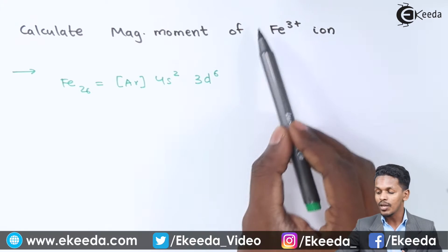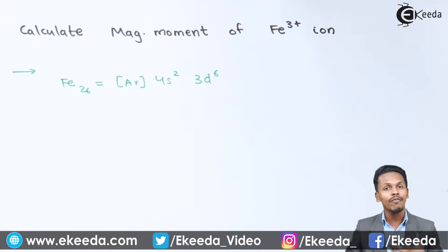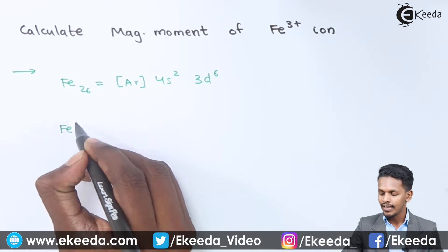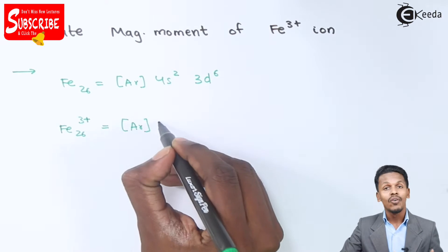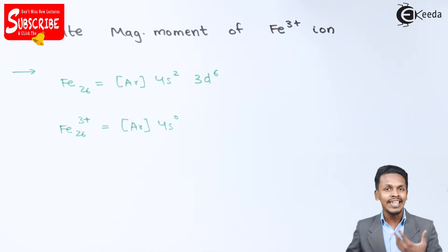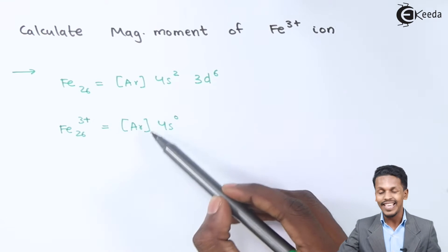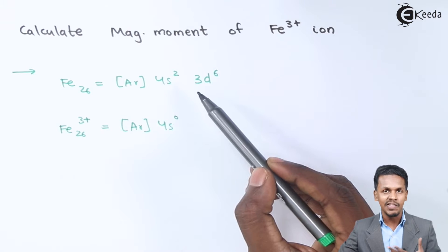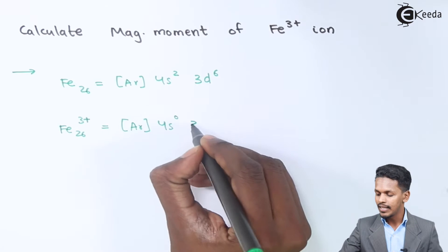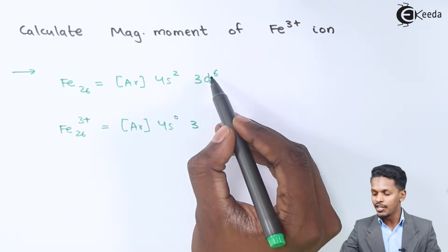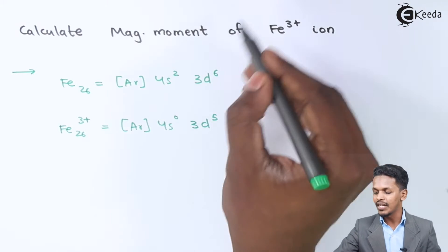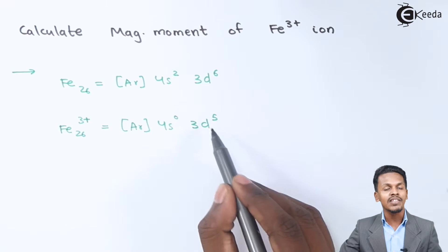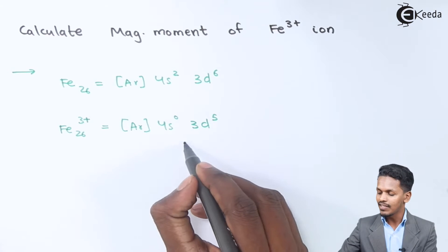For Fe³⁺ ion we have to remove three electrons. Electrons are eliminated first from the s orbital and then from the 3d orbital. So for the Fe³⁺ ion the electronic configuration will be [Ar] 4s⁰ 3d⁵, because two electrons are removed from 4s and one electron is removed from 3d to give the Fe³⁺ ion.